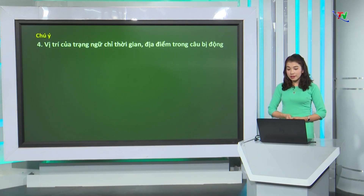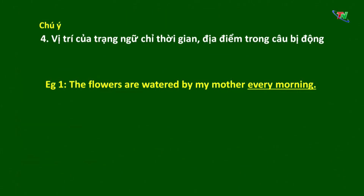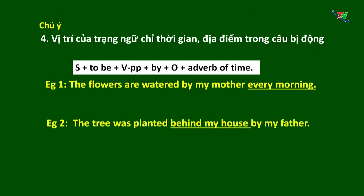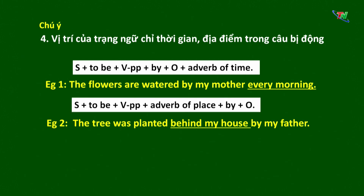Tiếp theo chúng ta cùng tìm hiểu về vị trí của trạng ngữ chỉ thời gian và địa điểm ở trong câu bị động. Ví dụ: 'The flowers are watered by my mother every morning.' Ở đây 'every morning' là một trạng ngữ chỉ thời gian, nó đứng sau 'by my mother', tức đứng sau by + tân ngữ. Công thức: Chủ ngữ + to be + quá khứ phân từ + by + tân ngữ + trạng ngữ chỉ thời gian. Vậy với trạng ngữ chỉ nơi chốn: 'The tree was planted behind my house by my father.' 'Behind my house' là trạng ngữ chỉ địa điểm, nó đứng trước 'by my father'. Công thức chung: Chủ ngữ + to be + quá khứ phân từ + trạng ngữ chỉ địa điểm + by + tân ngữ.